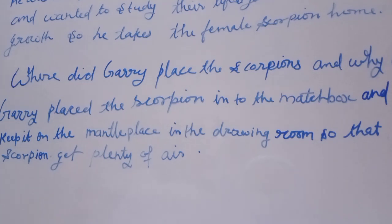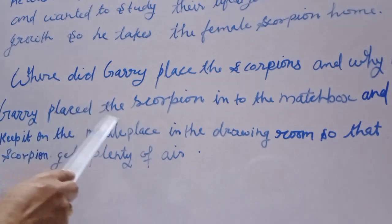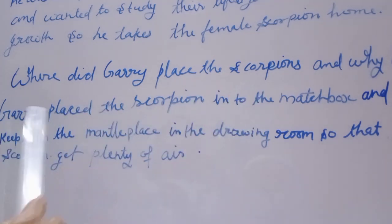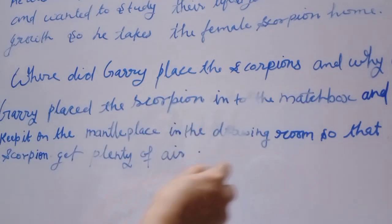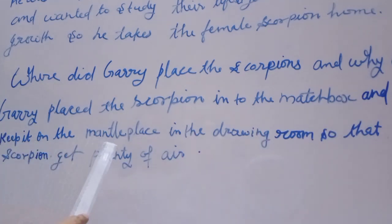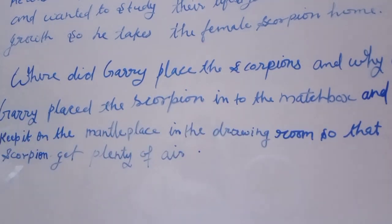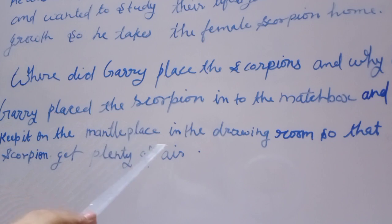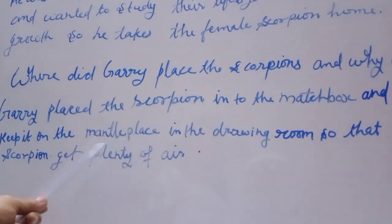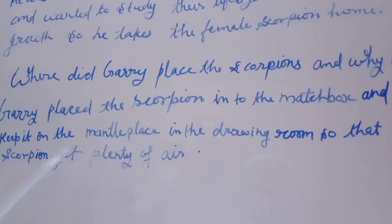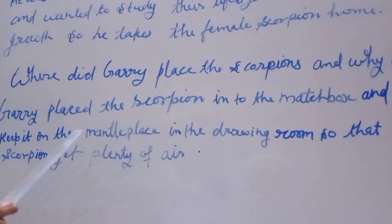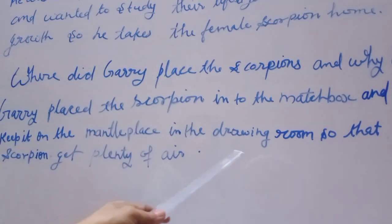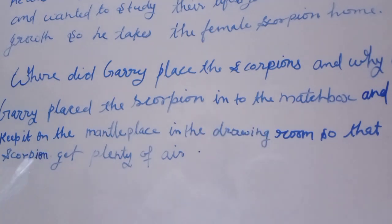The second question is: where did Gary place the scorpion, and why? Gary placed the scorpion in a matchbox and kept it on the mantelpiece in the drawing room, so the scorpion would get plenty of air.